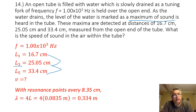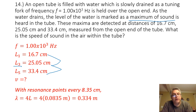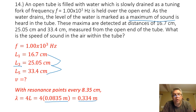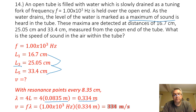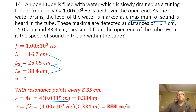The wavelength on a closed pipe equals four times the length of the pipe. Four times 0.0835 meters gives a wavelength of 0.334 meters. With a frequency of 1000 hertz and a wavelength of 0.334 meters, multiplying those together gives a wave speed of 334 meters per second.